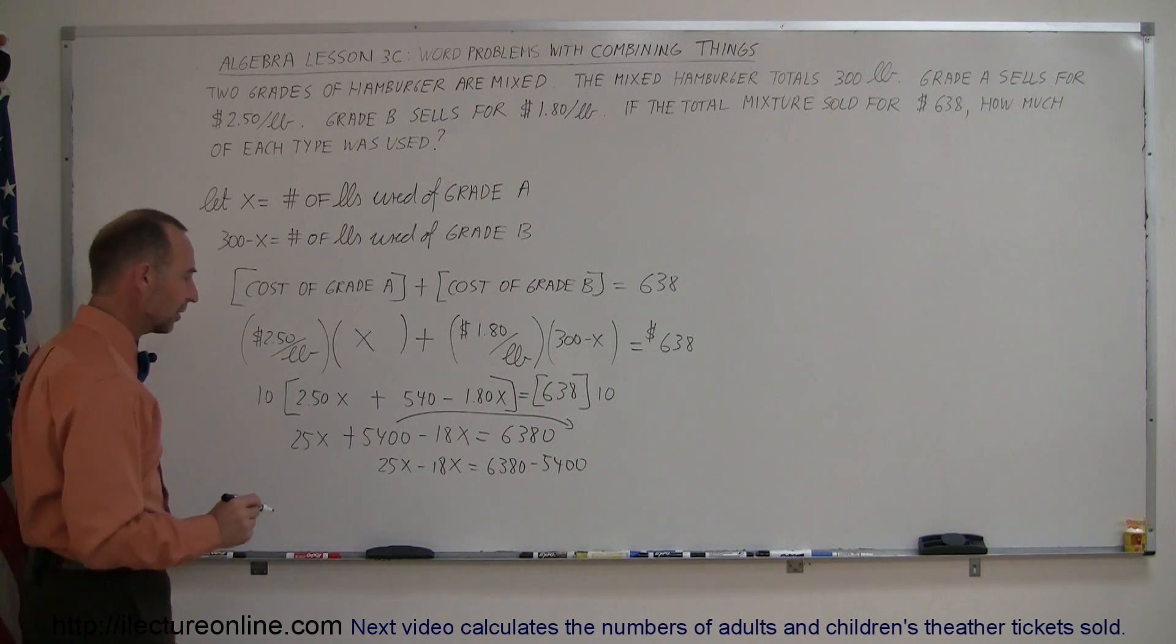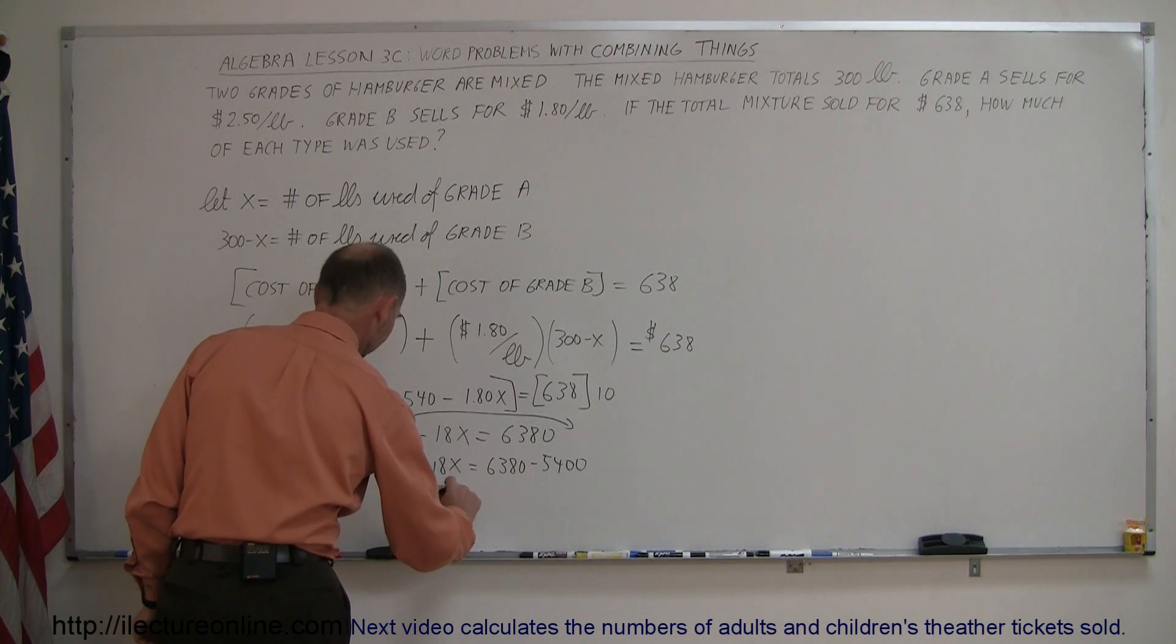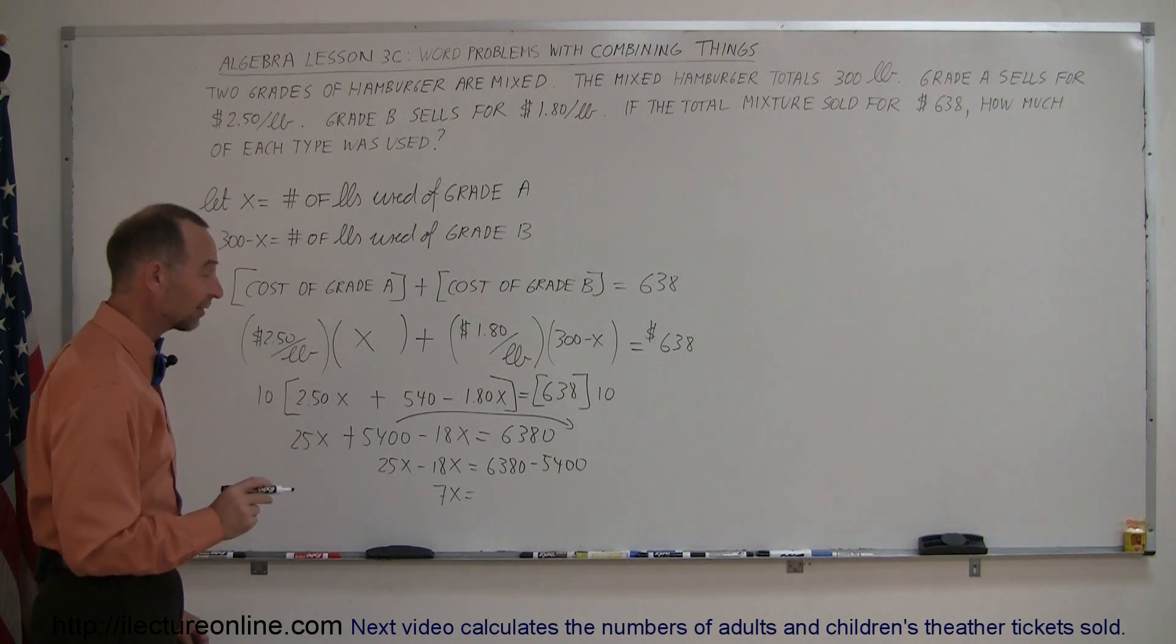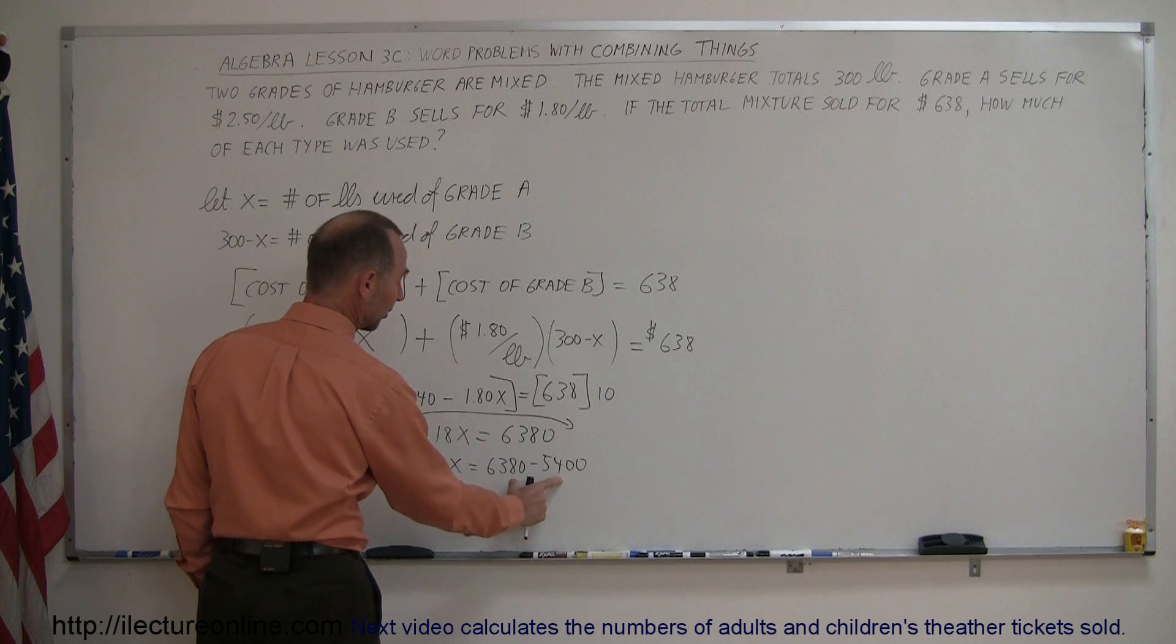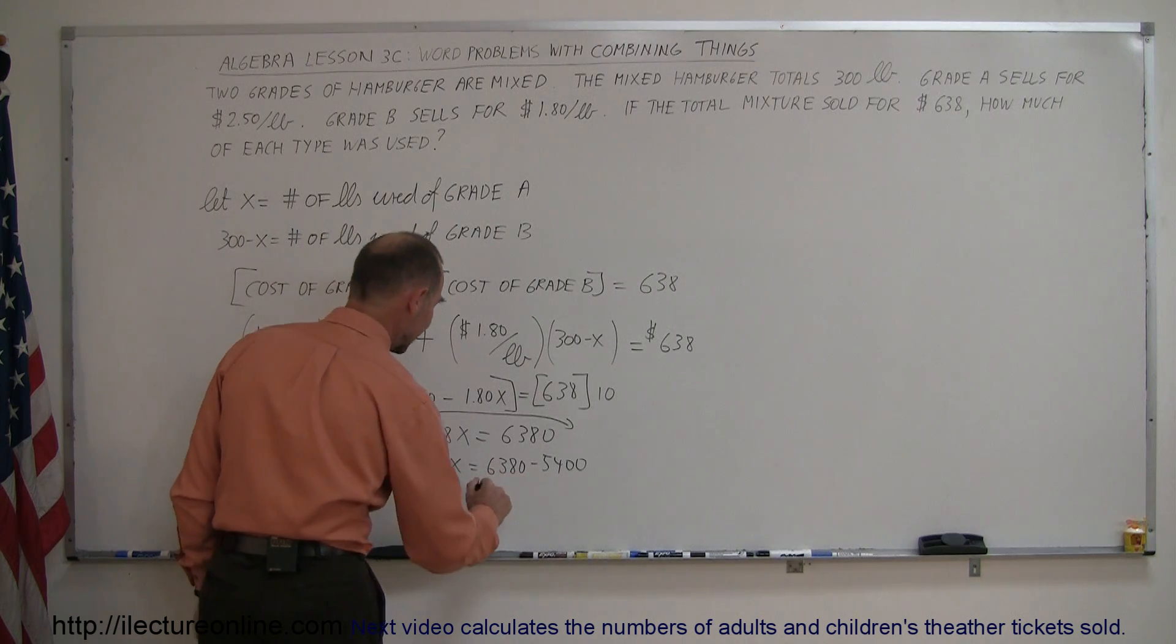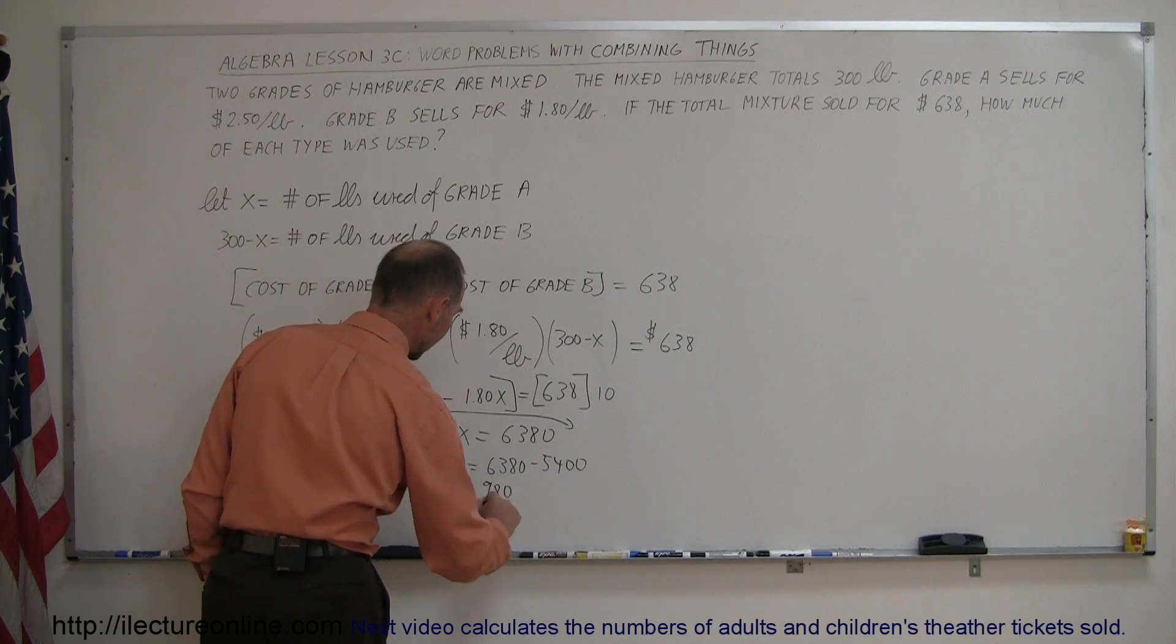25 minus 18 is 7X, and 6,380 minus 5,400, well, if this was 6,400, the difference would be 1,000. If it's 20 less, that would be 980.